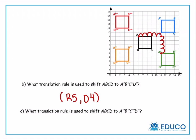Let's look at C. What translation rule is used to shift ABCD to ABCD triple prime? So that means our black box all the way to our yellow box. Let's have a look. Again, I'm going to pick point A and see how it gets to this point. Now remember, you can pick any point you want, as long as you're comparing point A on one box to point A on another box. So you can't compare A to D or A to B. It has to be A to A.